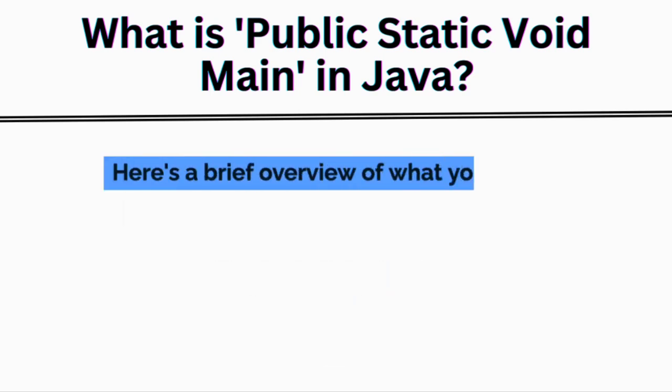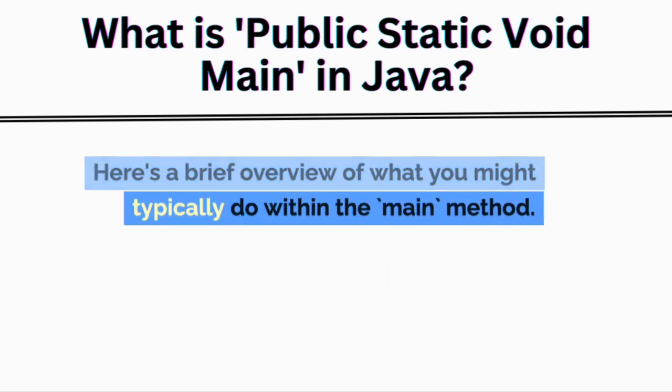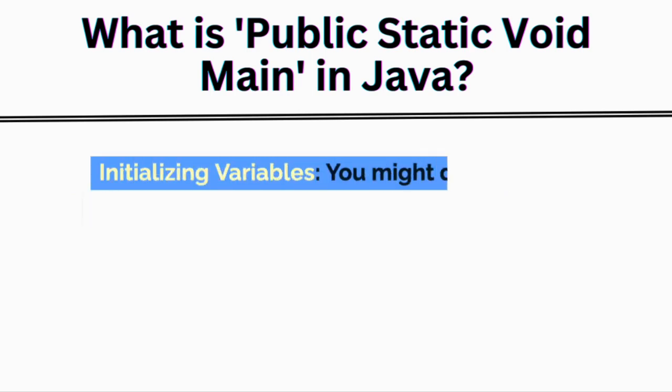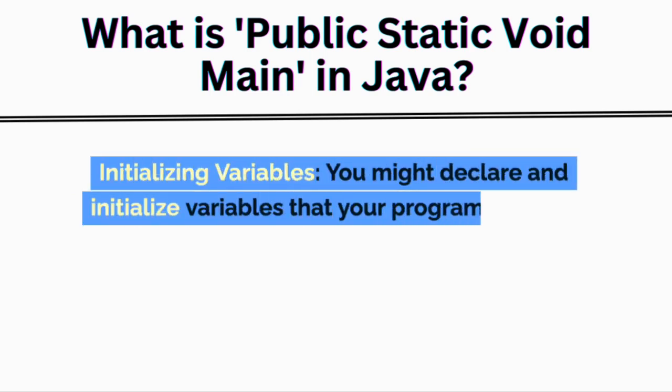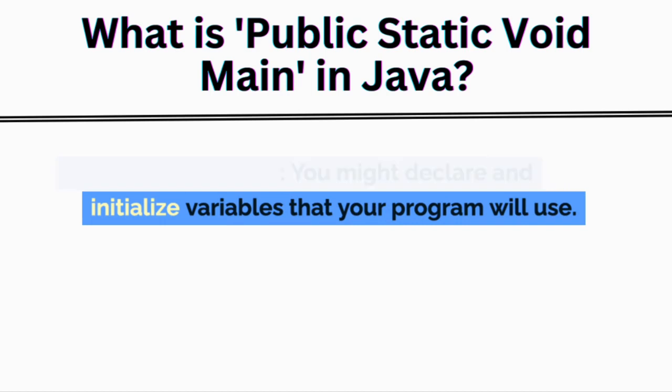Here's a brief overview of what you might typically do within the main method. Initializing variables: you might declare and initialize variables that your program will use.